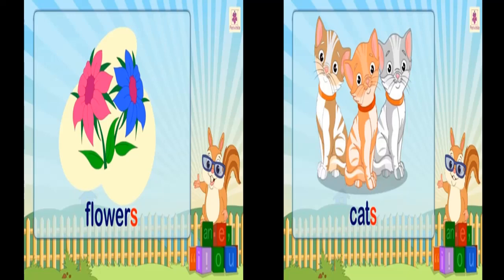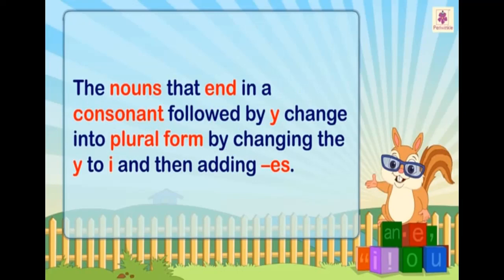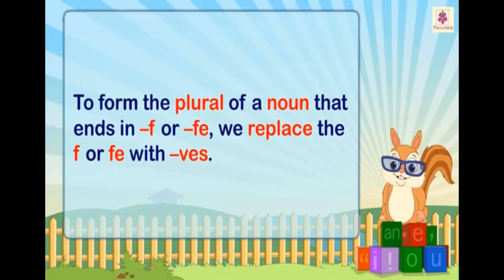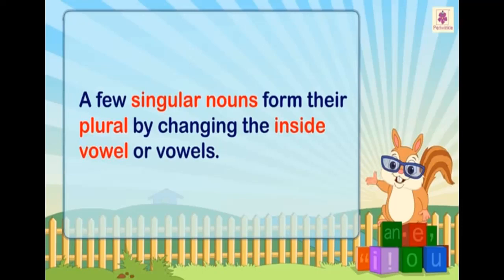For most singular nouns, we add 's' to make their plural forms. We add 'es' to nouns that end in ch, sh, o, s, double s, x, and z to get their plural forms. Nouns that end in a consonant followed by y change into plural form by changing the y to i and then adding es. To form the plural of a noun that ends in f or fe, we replace the f or fe with ves. Nouns that end in a vowel followed by y change into plural form simply by addition of s. A few singular nouns form their plural by changing the inside vowel or vowels.